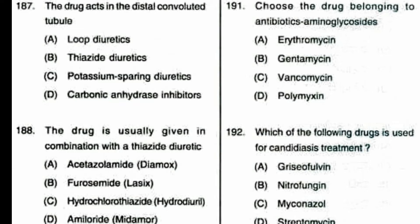Question number 188: the drug is usually given in combination with a thiazide diuretic. Which drug is given in combination with a thiazide diuretic? Option A: acetazolamide (Diamox), B: furosemide (Lasix), C: hydrochlorothiazide (HydroDIURIL), D: amiloride (Midamor). The correct answer is option D, amiloride. Potassium-sparing diuretics are always given in combination with thiazide diuretics.